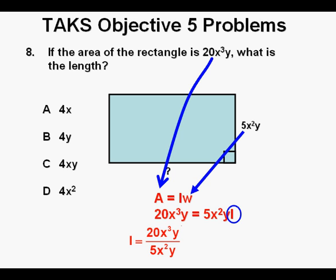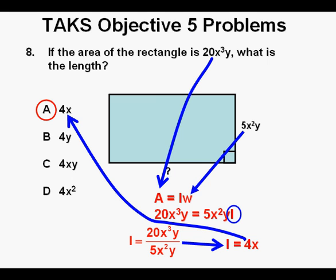And since 20 over 5 is 4, x cubed divided by x squared is x, and y over y cancel each other at equal 1, we have l equals 4x. And that means that our answer to this problem is a.